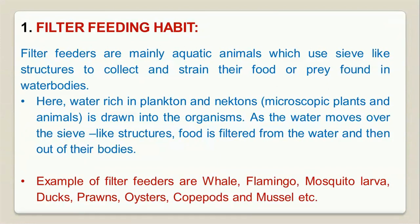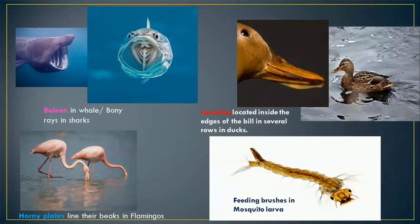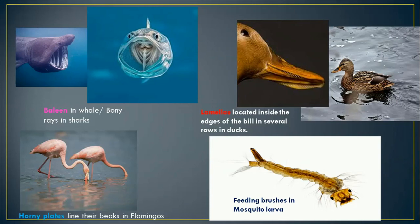Examples of filter feeders: we have whales, flamingos, mosquito larvae, ducks, clams, oysters, copepods, mussels, and so on. The first example is the baleen whale. Baleen are bony-like fine structures arranged in their mouths, used to filter food from the water. The second is lamellae, found in ducks, located inside the edges of the beak, used for filtering food. Honey plates line the beaks in flamingos for filtering their food. Mosquito larvae use feeding brushes connected to their mouths to draw in water and filter food.